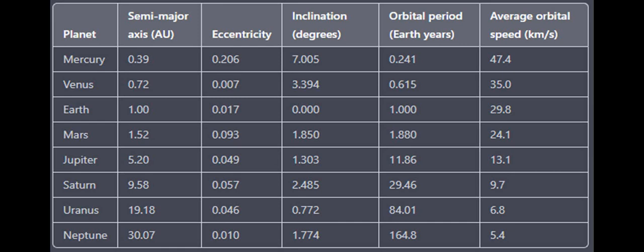One example is Comet Halley, which has an eccentricity of 0.97 and takes 76 years to complete one orbit around the Sun.